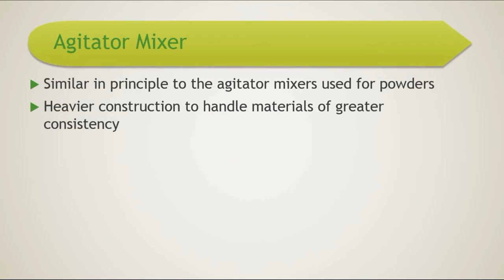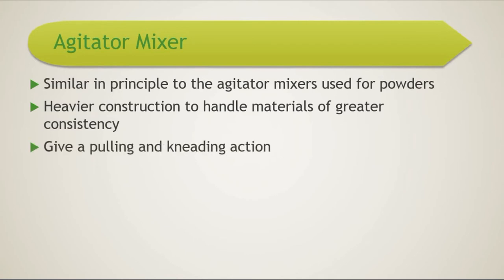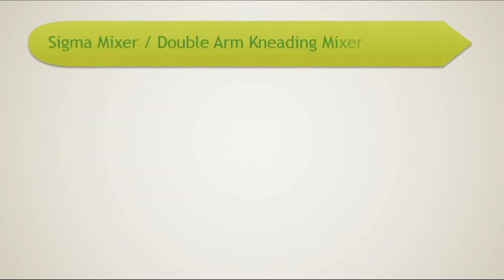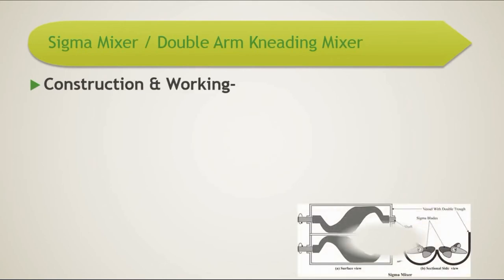These mixers are of heavier construction to handle materials of greater consistency, as there is an increase in consistency when more solid is added. The agitator is designed to give a pulling and kneading action; its shape and movement clears the material from all sides and corners of the vessel. The first example of such a mixer is the sigma mixer.